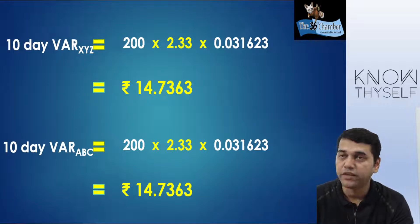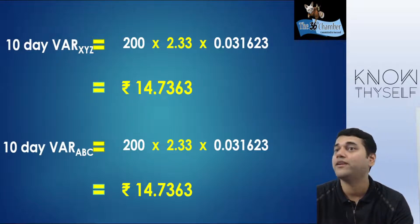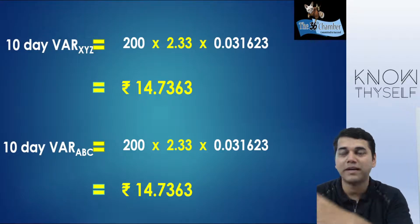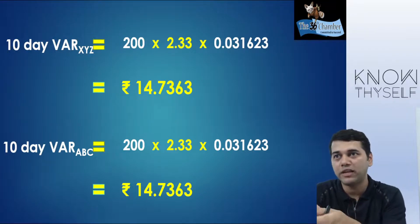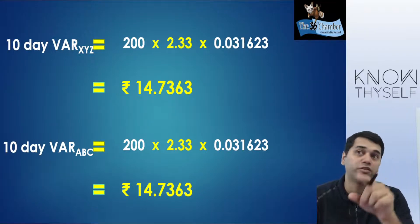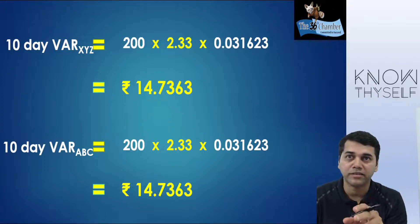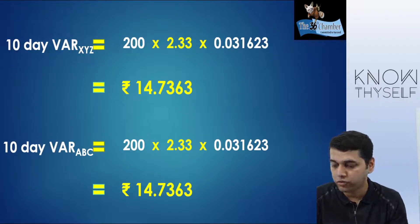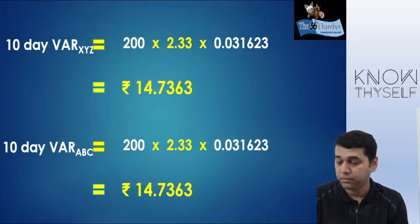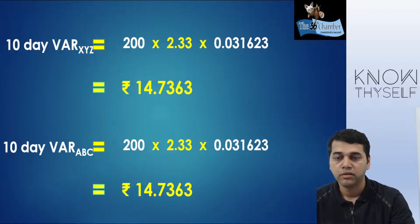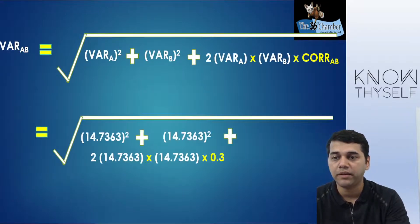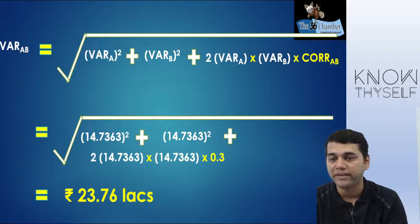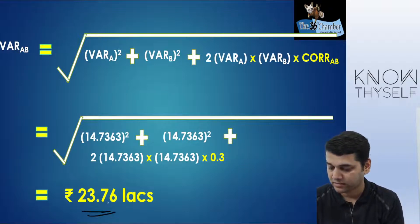Correlation is 0.3 — not perfect positive or perfect negative — so you cannot simply add them. If it were perfect positive, you would just add both VARs. If perfect negative, you subtract. Here, correlation is 0.3, so you cannot use it directly. Portfolio VAR = √(VAR_ABC² + VAR_XYZ² + 2 × VAR_ABC × VAR_XYZ × 0.3). Calculation gives 23.76 lakhs.